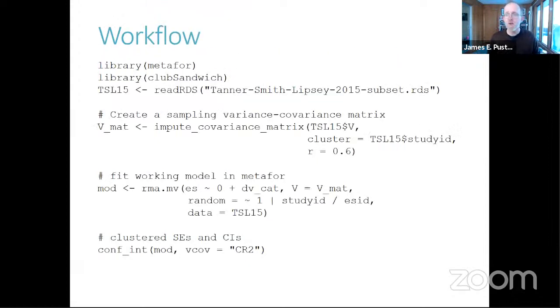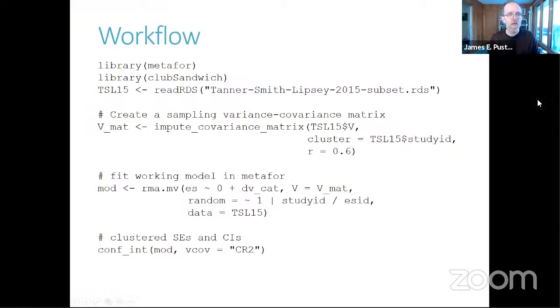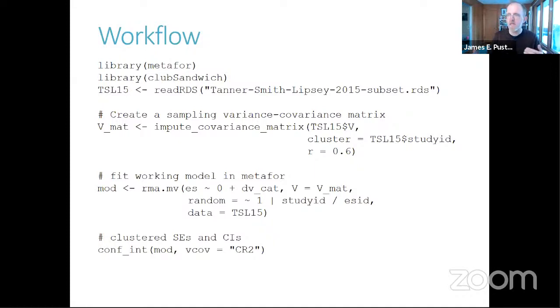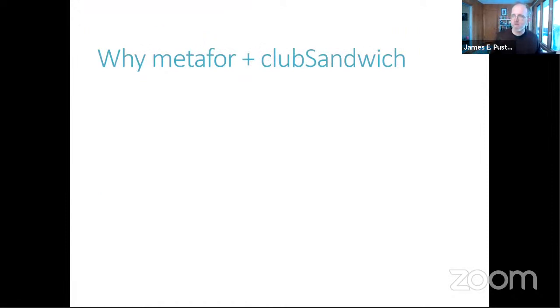The workflow essentially involves three steps. First, expressing your assumption about the degree of correlation between effect sizes using the impute covariance matrix function. Second, estimating a working model through metaphor. And third, feeding that working model into a function from club sandwich. It works fairly seamlessly.